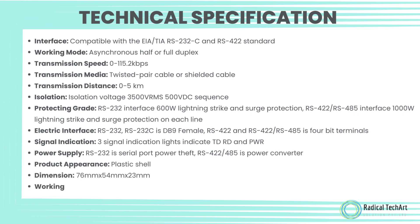Isolation voltage is 3500 VRMS at 500V DC. Protection grade: RS-232 interface has 600-watt lightning strike and surge protection; RS-422/RS-485 interface has 1000-watt lightning strike and surge protection on each line. Electric interface: RS-232C is DB9 female; RS-422 and RS-485 is 4-bit terminals.